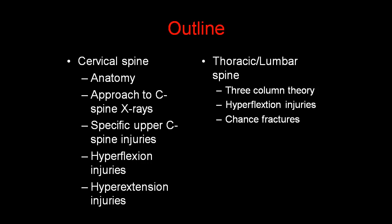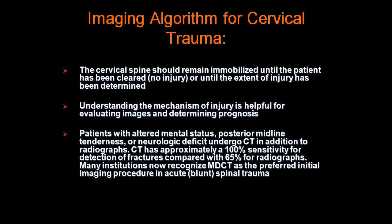For the cervical spine, we'll understand the anatomy, an approach to cervical spine x-rays, specific upper cervical spine injuries, hyperextension injuries, and hyperflexion injuries. For the thoracic and lumbar spine, we'll talk about the three-column theory, as well as hyperflexion injuries and chance fractures.